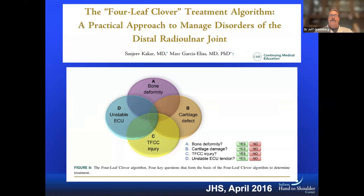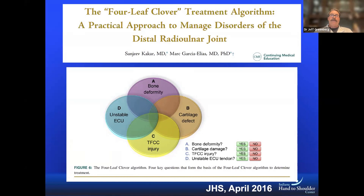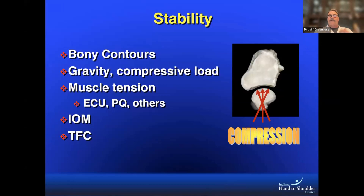The Berger classification doesn't exclude use of other schemes, such as the four-leaf clover algorithm that Marc Gasiel-Is and Sanj Kakar proposed. This algorithm asks four questions about bone deformity, TFC, ECU, and cartilage defects — it's really just an extension of Berger's functional classification. If you morph both of these together, this gives you a way to diagnose, manage, and treat almost every disorder of the distal radial ulnar joint.